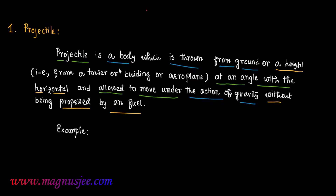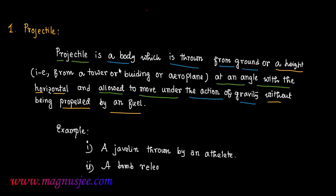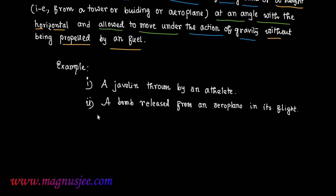Number one: a javelin thrown by an athlete is an example of a projectile. Number two: a bomb released from an aeroplane in its flight is also an example of a projectile. These are a few examples of projectile.